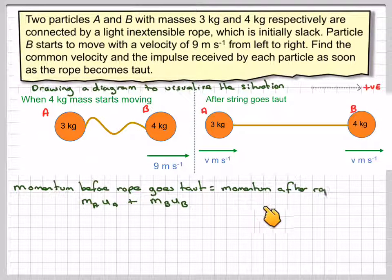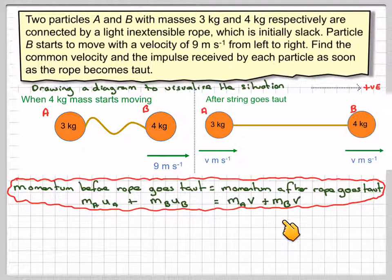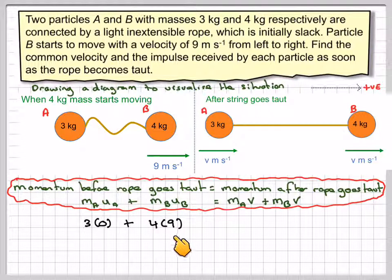And the momentum after the rope goes taut will be equal to mAV plus mBV. So putting the numbers in, that will be 3 times 0 plus 4 times 9 is going to be equal to 3V plus 4V.